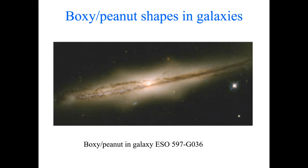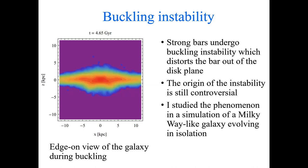For more than three decades now, we thought we knew what was going on. It has been called buckling instability — a phenomenon that happens in strong bars. When we simulate the formation of the bar, we see it growing, and then at some point it distorts out of the plane of the bar or the initial disc. We see it fluctuating a bit in shape, and then the bar becomes much thicker and ends up with this boxy peanut shape.